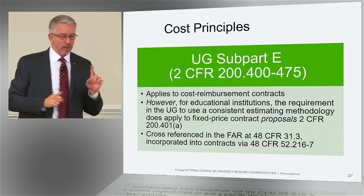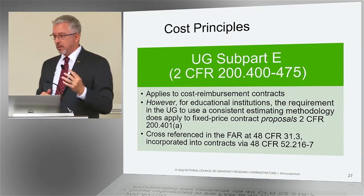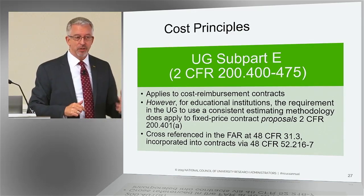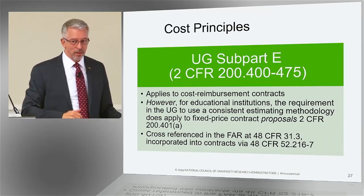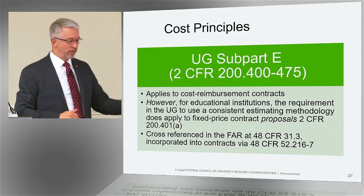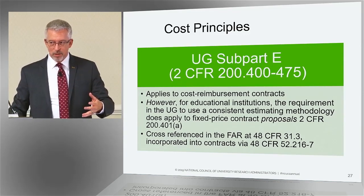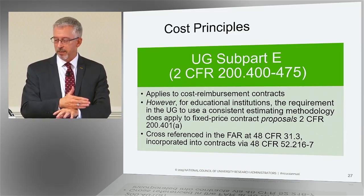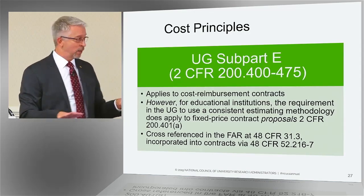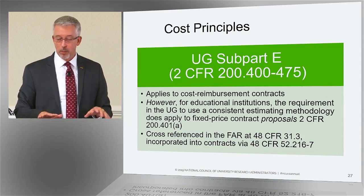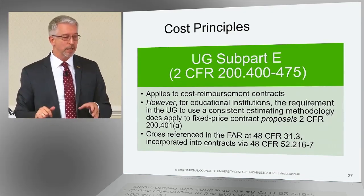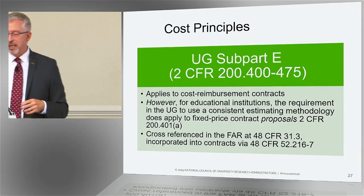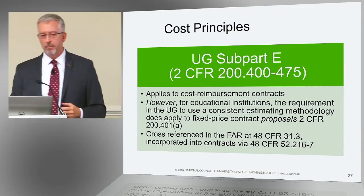In general, fixed price awards are not auditable from a cost perspective, because there are no costs — it's a price. You agreed to provide a report, a widget, whatever it might be, for a set amount of money. That's the way fixed price awards work, whether it's a contract or a grant. There are fixed price grants, but universities don't normally see those — those are normally issued to small businesses, small nonprofits, and so forth.